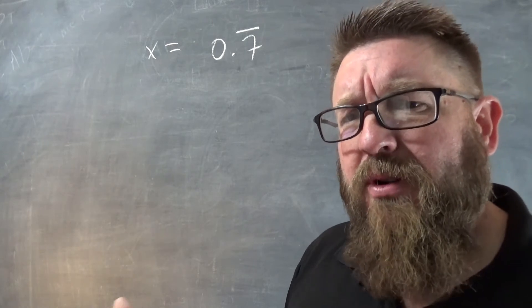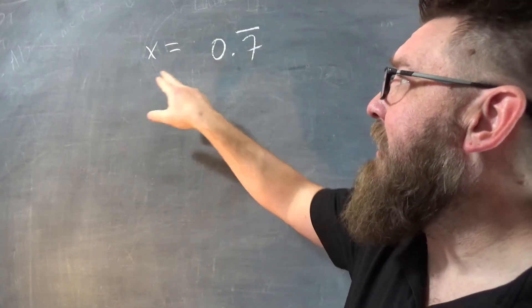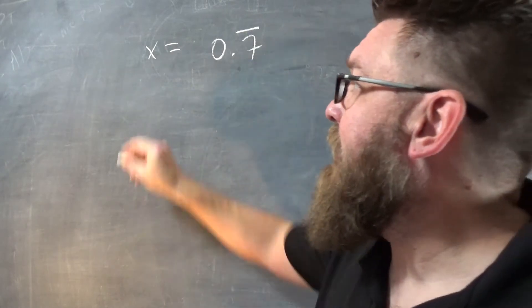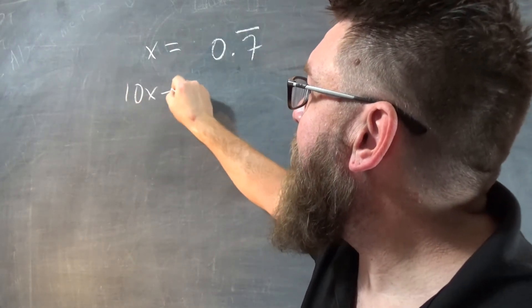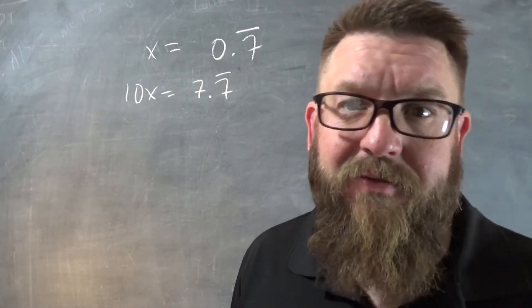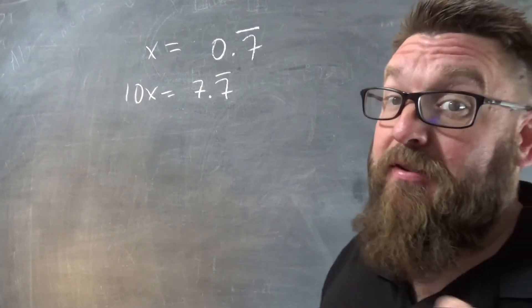So what we're going to do is we're going to multiply both sides of this equation by 10 to make this a whole number. It's going to be 7.7 repeating. So it's going to be 10x equals 7.7 repeating. There we go. Pretty fancy, huh? All right. Now, here's the trick.